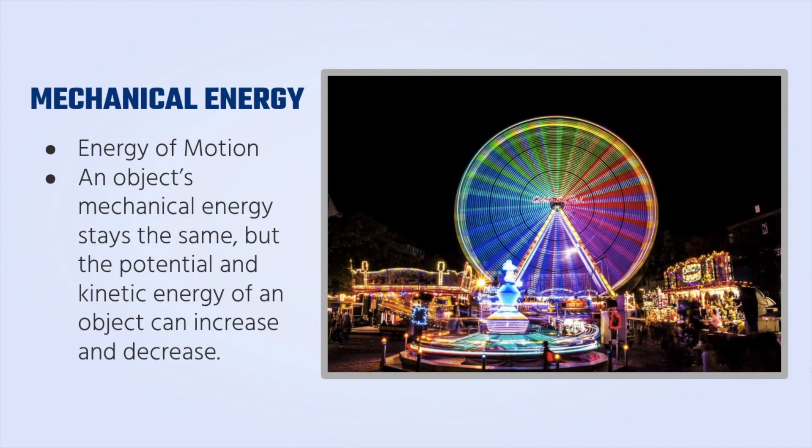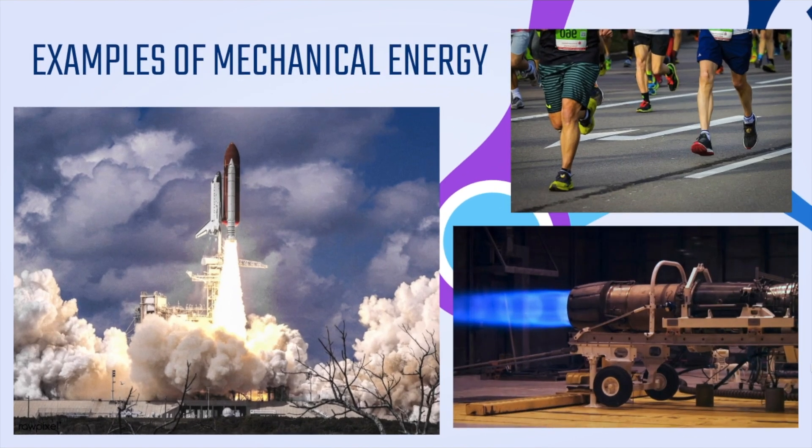Mechanical energy is the energy of motion. An object's mechanical energy stays the same, but the potential and kinetic energy of an object can increase and decrease due to the mechanical energy. This ferris wheel in the picture is a great example of mechanical energy with all of its moving parts. Here are some more examples: running, the space shuttle launch, and a jet engine.